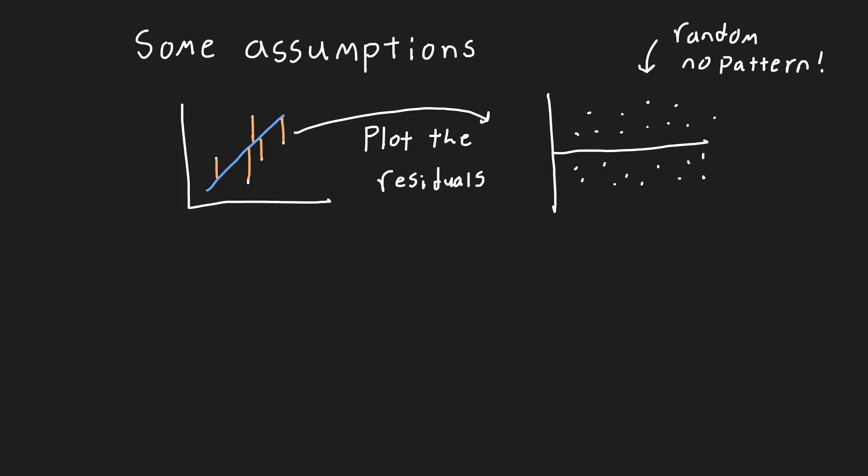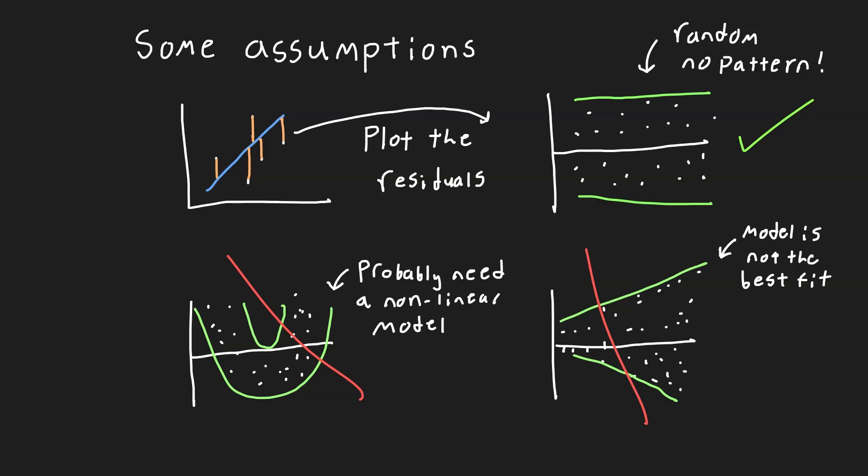Statisticians refer to this property as homoscedasticity. If there is a pattern like a cone shape or a U shape, then your model likely missed something and your line of best fit is not very accurate. This could indicate you need to perform a different kind of regression or the variable you chose was not the best to predict the number of fish caught. Here it looks like a residual plot is good and so we can accept our line of best fit.